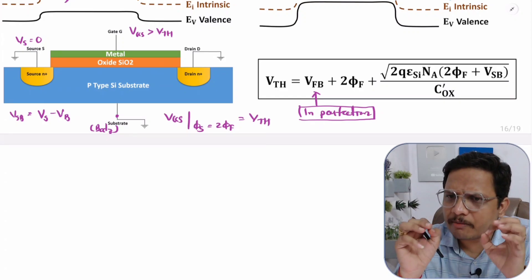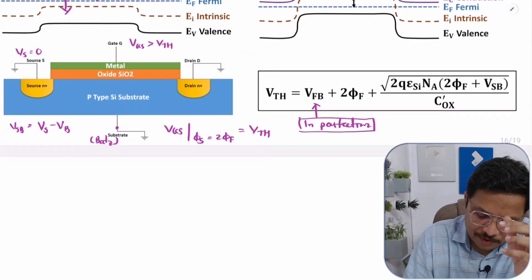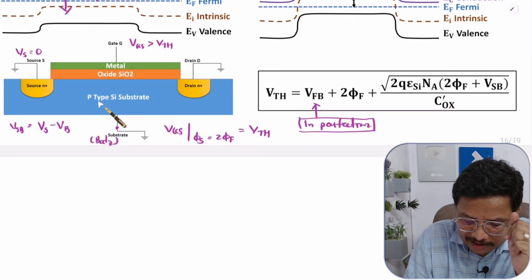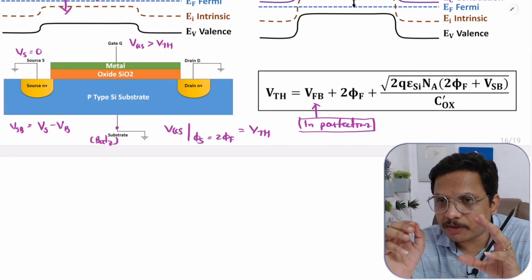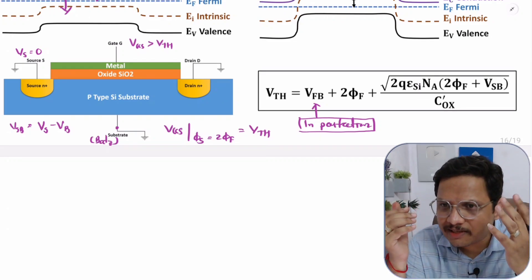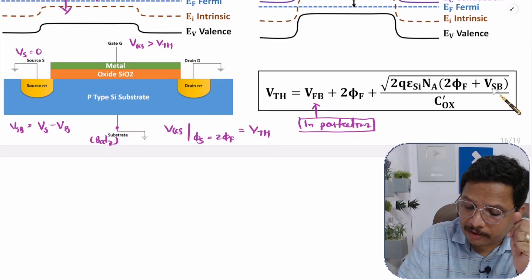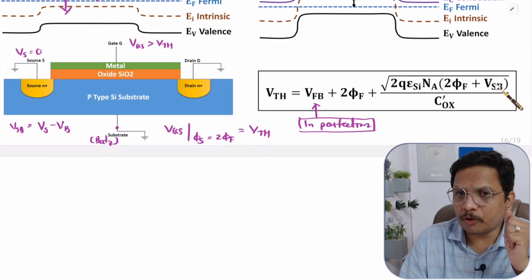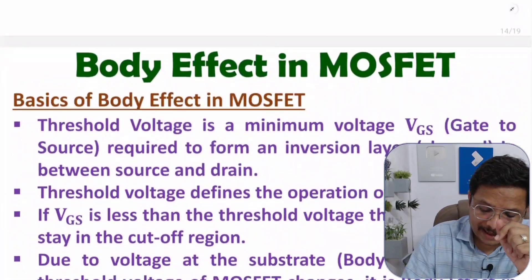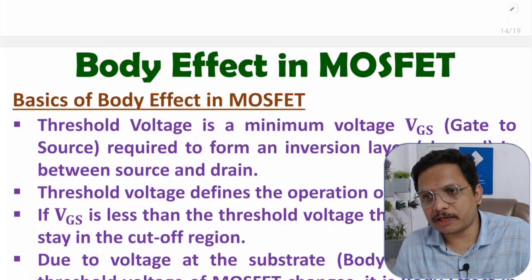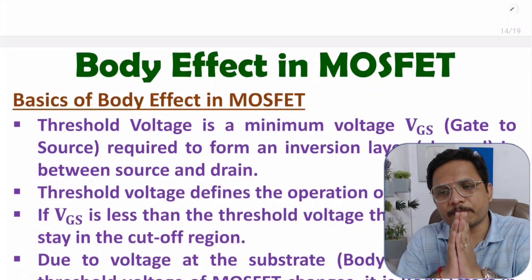The MOSFET's operational region is purely based on threshold voltage. Only if VGS is greater than VTH is there formation of an inversion layer; otherwise MOSFET stays in cutoff region. Drain current equations also depend on the substrate terminal voltage, also referred to as body voltage — and based on that, this effect is called the body effect. I hope you understood; if you have anything to share please note it in the comment section. Thank you for watching.